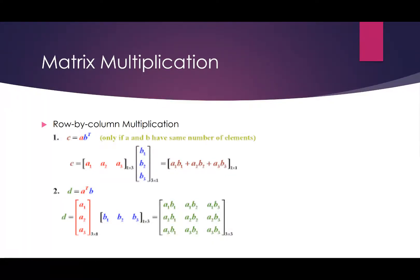We're going to continue Chapter 6, Section 1. Last part we left off, we did matrix addition and matrix scalar multiplication, not matrix multiplication. But now we're going to jump into matrix multiplication, which is significantly different than adding matrices together or multiplying a matrix by a simple number. This is where you take one matrix and you multiply it by another matrix.